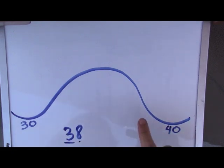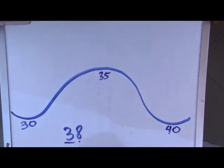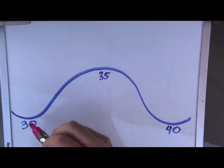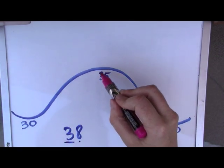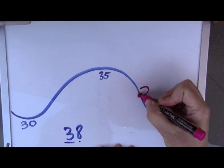Now all we need is the number that comes in the middle, which is thirty-five. Now we've made kind of a curvy number line and all we need to do is find thirty-eight. So thirty, thirty-five, thirty-eight will be right about here, and I'm going to draw a car.